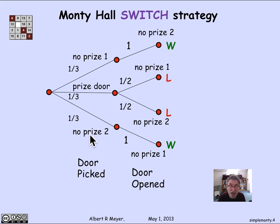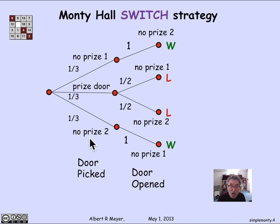We're going to get some mileage out of the more complicated tree in a later video segment when we start talking about conditional probabilities — what are the probabilities of things happening at various stages in the experiment. We will want to have some of these other vertices that represent stages of the experiment. But if we'd really been thinking solely about how to analyze the probability of winning with the switch strategy, this would have been a much better tree to start off with.